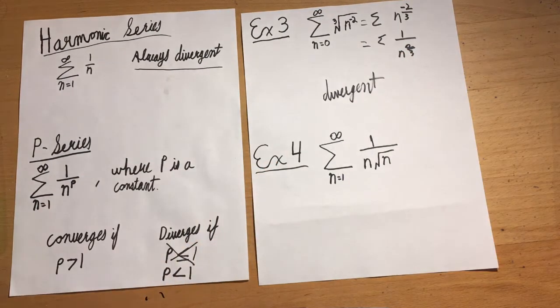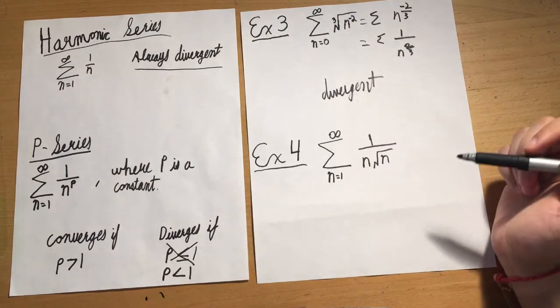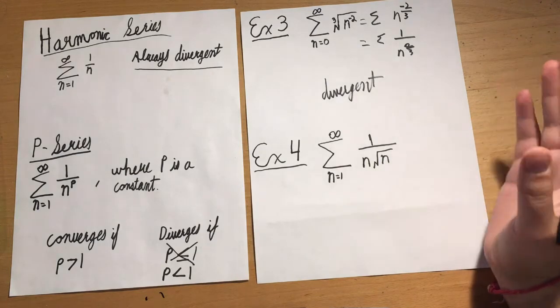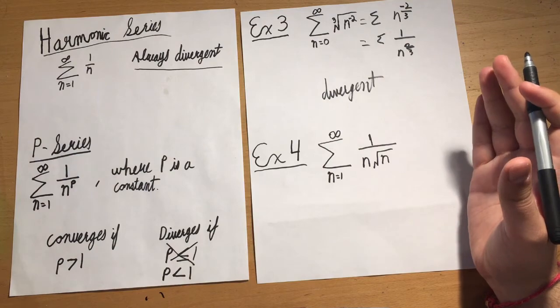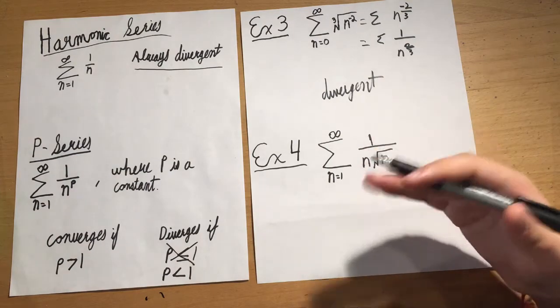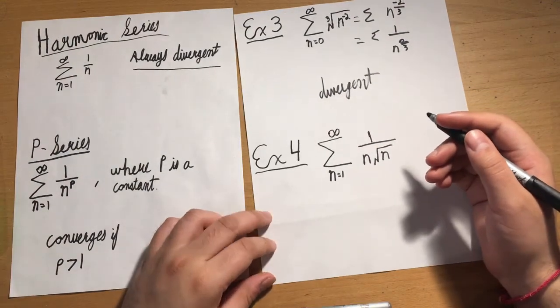Now let's look at our last example: infinite series of 1/(n times square root of n). Let's combine everything. It looks like we can get this into something where it's 1/n to some exponent, so it's either going to be p-series or harmonic.